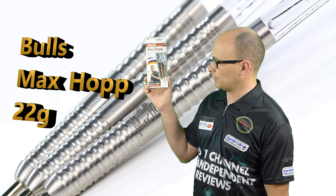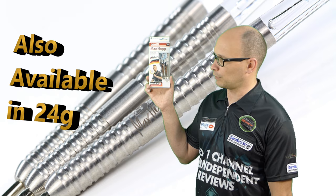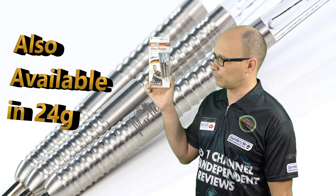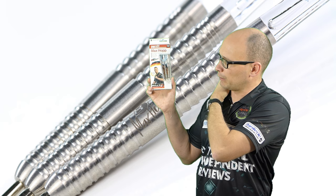In this review I'm reviewing the Bulls Max Hopp Maximizer 22 gram darts. There's also a 24 gram version available. These are 90% tungsten and they retail for around about £38.